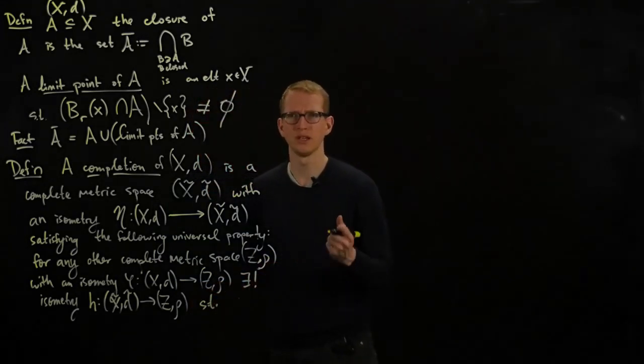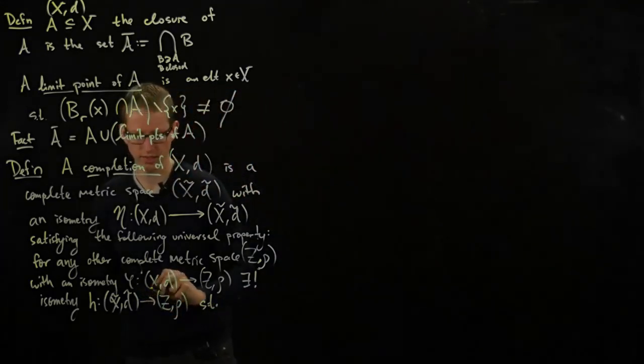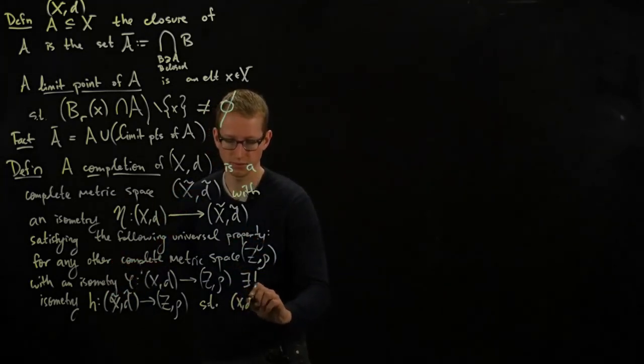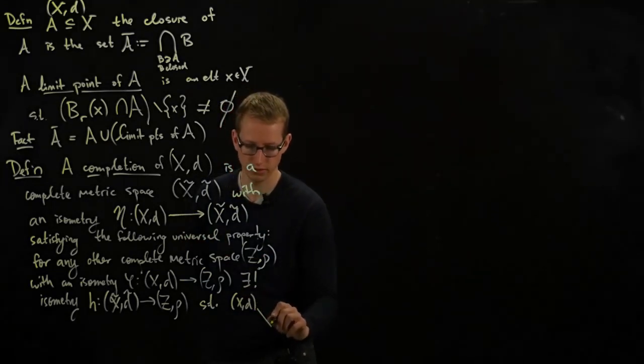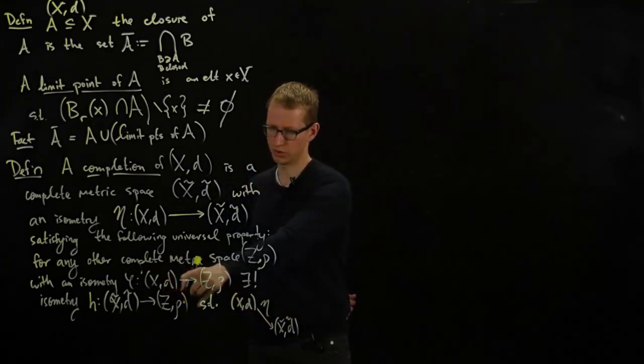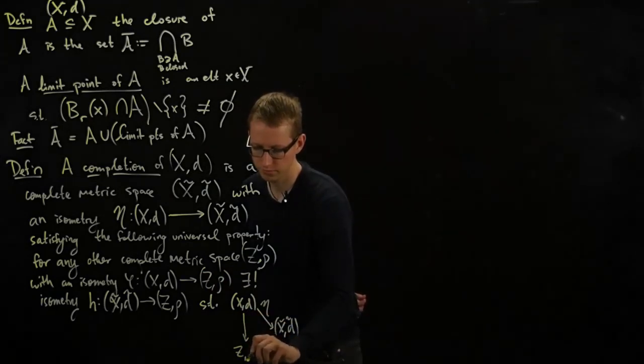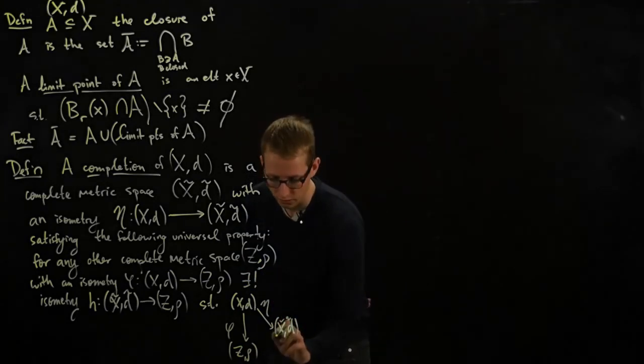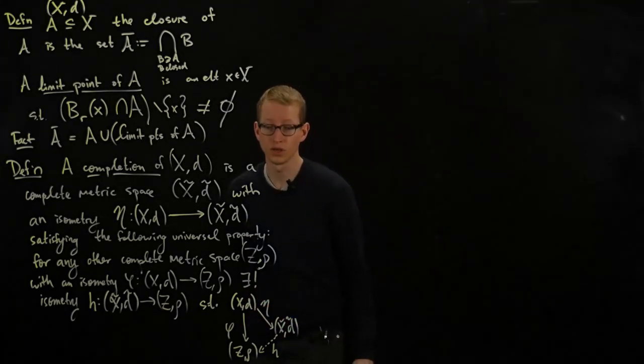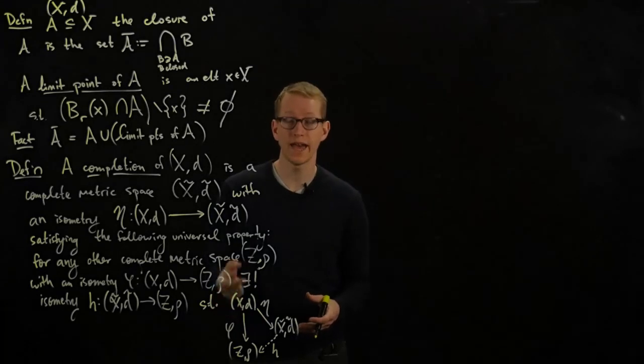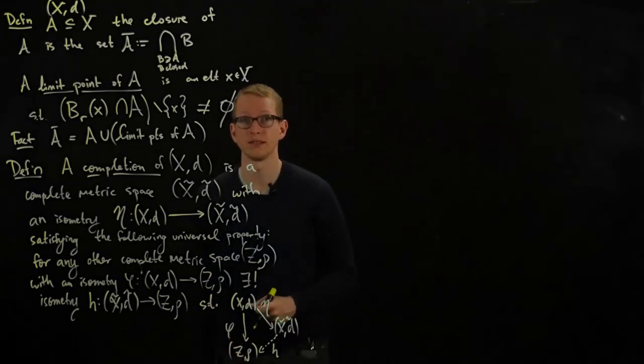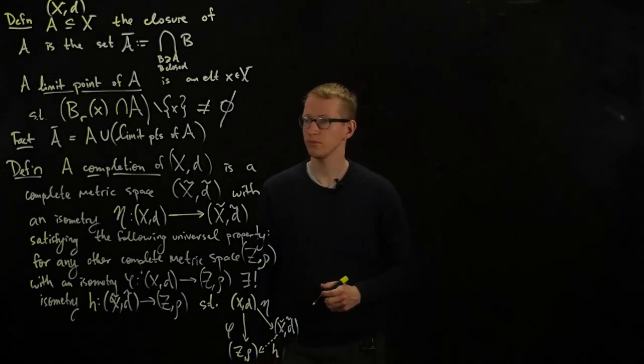Such that, and we want to make sure that this isn't just any old isometry, it satisfies an important condition. And that condition that it satisfies is that, let's put all of these maps together. We have x,d, we have this isometry to x tilde, d tilde. That's eta. And we also have an isometry from x, d to z. And we demand that this h here satisfies the condition that this diagram commutes. So it's our way of saying that the way that x is included in z is the same as the way that x is included in the completion and that completion sits inside of that imposter.